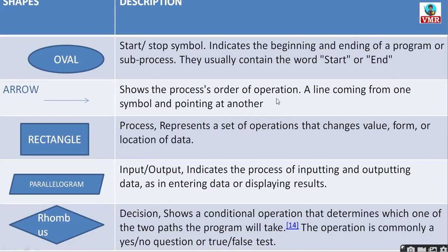Arrows represent the process of operation — from which box to which box you are moving. A line comes from one symbol and points to another. Next, the rectangle represents processing — a set of operations that change the value, form, or location of data. The parallelogram represents input or output — it indicates entering data or displaying results. Whether reading values or printing values, you use the parallelogram.